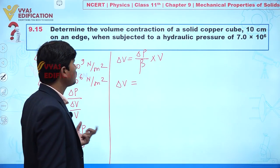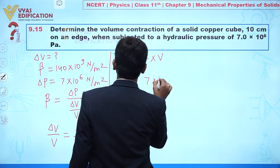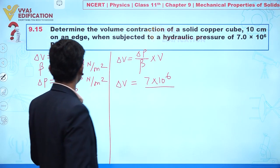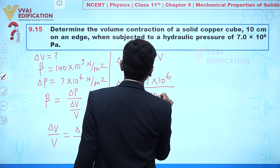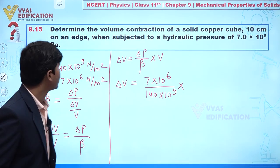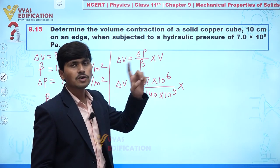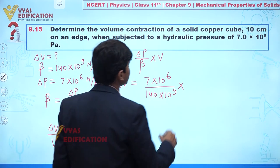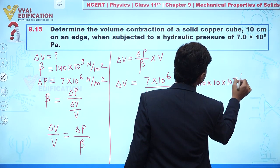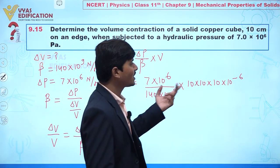So change in volume equals ΔP divided by β, multiplied by V. Change in pressure is 7 × 10⁶, divided by β which is 140 × 10⁹. The initial volume V: since it is a cube with edge 10 cm, V = 10 × 10 × 10 cm³ = 10⁻⁶ m³, converting from centimeters to meter cube.